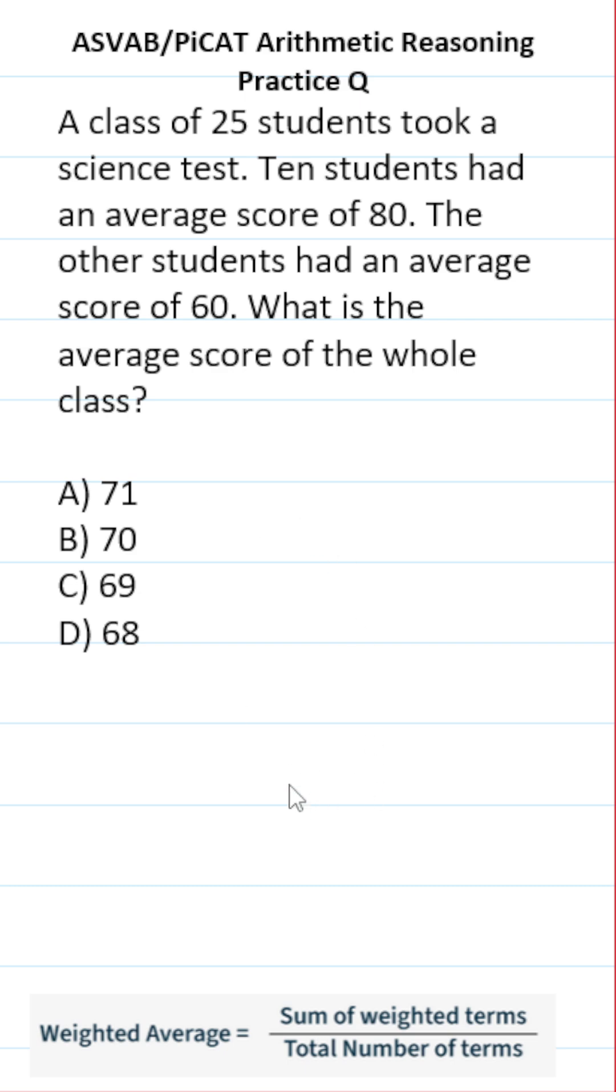In this case, we're going to be calculating a weighted average, which is going to be equal to the sum of the weighted terms divided by the total number of terms. We know that 25 students took the test, so that's the total number of students.